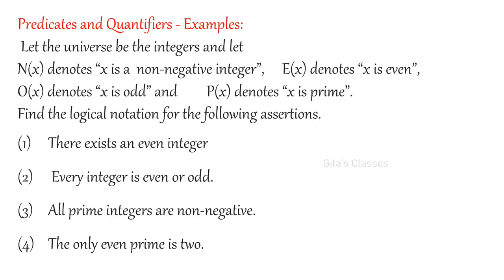If English statements are given, we can write in symbolic form, and if symbolic forms are given, we can write in English. So let the universe be the integers. Let N(x) denote x is a non-negative integer, E(x) denote x is even, O(x) denote x is odd, and P(x) denote x is prime. We have to find the logical notation for the following assertions.